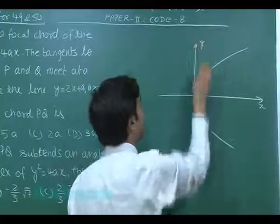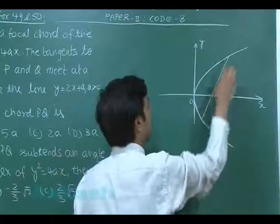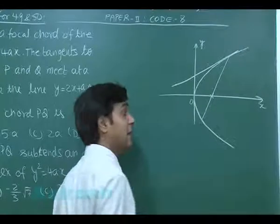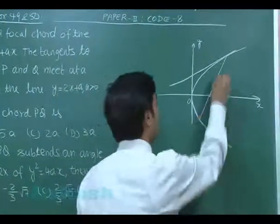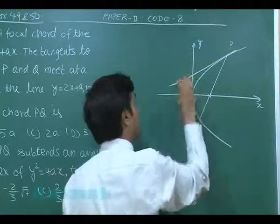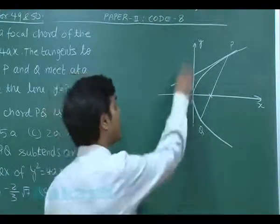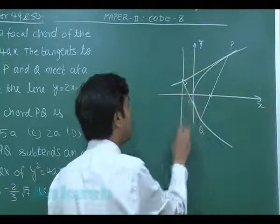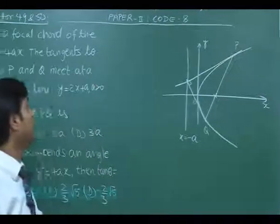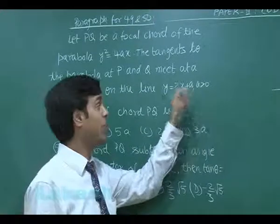Let's draw the geometry: x-axis, y-axis, origin, and a focal chord. We know that the tangents at the ends of a focal chord intersect at the directrix of the parabola. So the intersection point lies on the directrix x = -a. In the question, the tangents intersect on the line y = 2x + a, so when we put x = -a, we get y = -a as well.